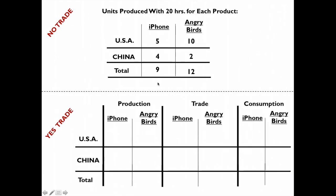Let's go back to the table and apply that. What I want to do is come up with numbers that are 2 higher than 9 here, and 2 higher than 9 here — at least 2 higher — so that I can actually split the 2, one for China and one for the US. I split the 2 extra here, one for China and one for the US, so they can consume at least one more of each.